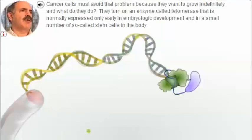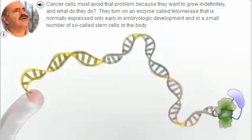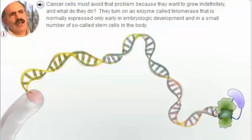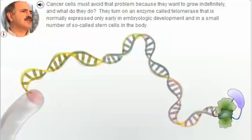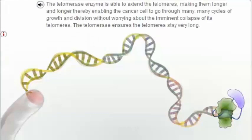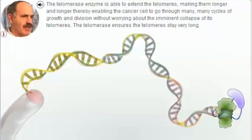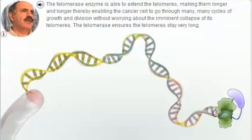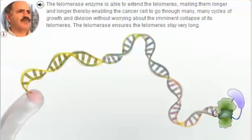Cancer cells must avoid that problem because they want to grow indefinitely. What they do is turn on an enzyme called telomerase, which is normally expressed only early in embryologic development and in a small number of so-called stem cells in the body. The telomerase enzyme is able to extend the telomeres, making them longer and longer, thereby enabling the cancer cell to go through many cycles of growth and division.